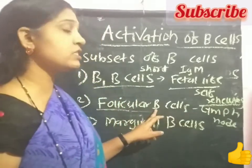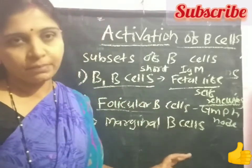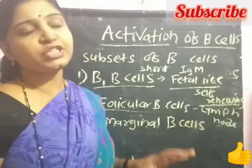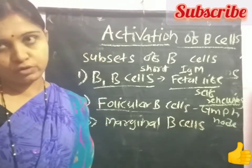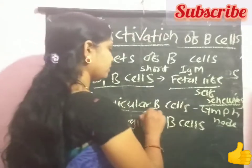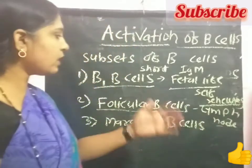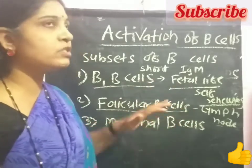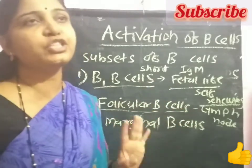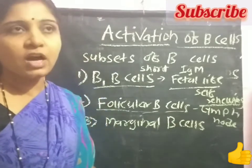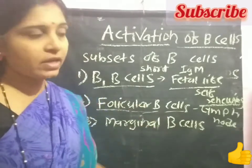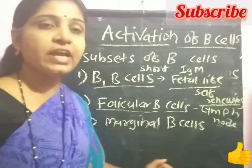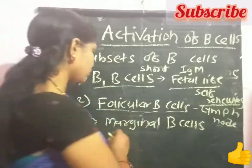On the surface of follicular B cells, there is the presence of both IgM and IgD types of immunoglobulin molecules. After antigenic stimulus, these cells are responsible for producing both IgM and IgG types of immunoglobulin molecules after activation.